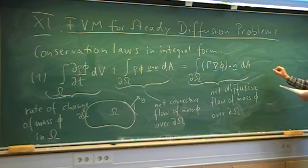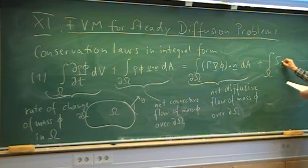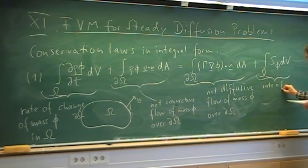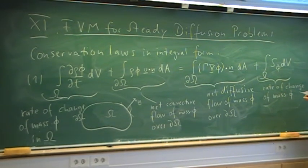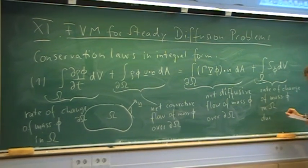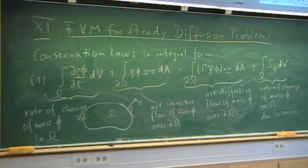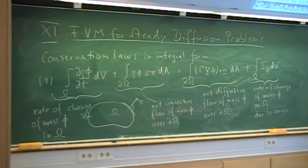We may also have a source term, which appears as a volume integral denoted S_phi. That is the rate of change of mass times phi in the control volume omega due to some source. Taking the example of a mass fraction in combustion with chemical reactions, that would be a source term. Or in heat conduction, we could also have that.